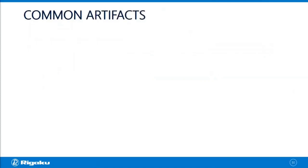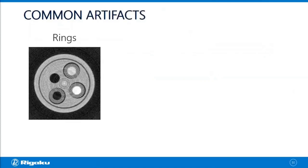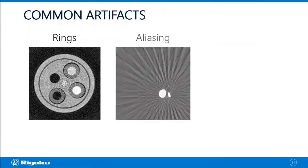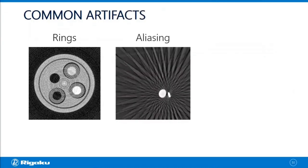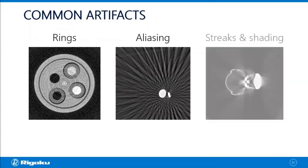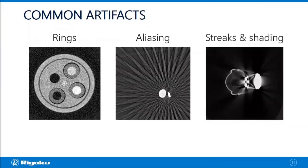The common artifacts include concentric rings or aliasing, which usually show up as radial lines, and streaks and shading.